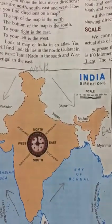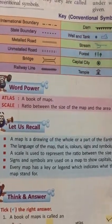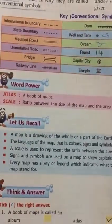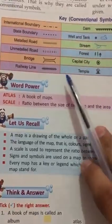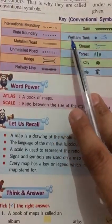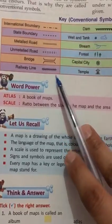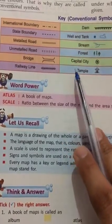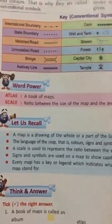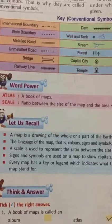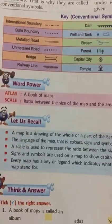Look at this picture — these are the symbols and you can see them here. This shows international boundaries, state boundaries, metal roads, unmetalled roads, bridges, and railway lines. All these symbols are used in maps. I hope you understand this topic. Thank you.